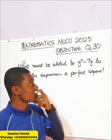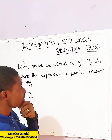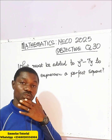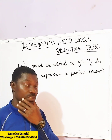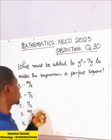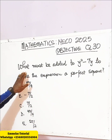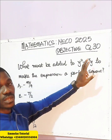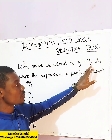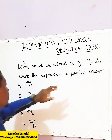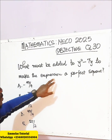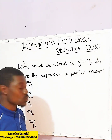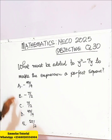Welcome to Me Like Online tutorial. Let us look at question 30 of the NELCO 225 preparative question and see what must be added to y squared minus 7y to make the expression a perfect square.